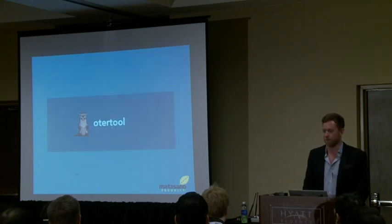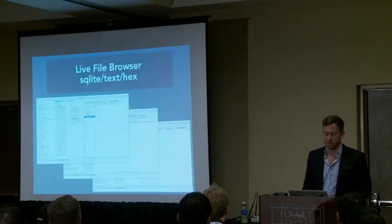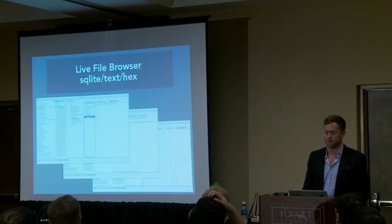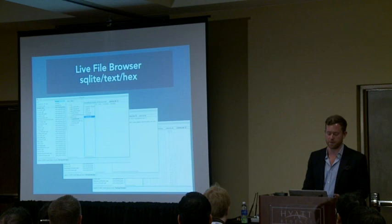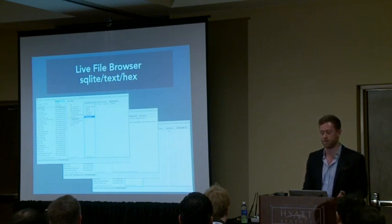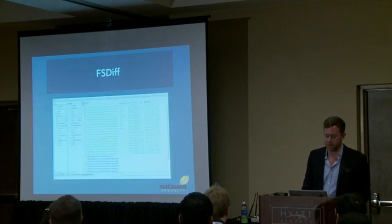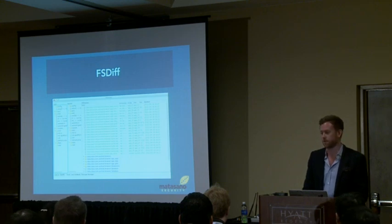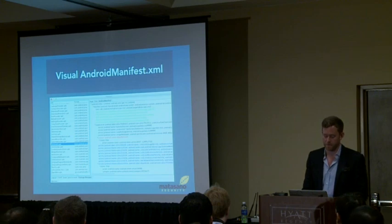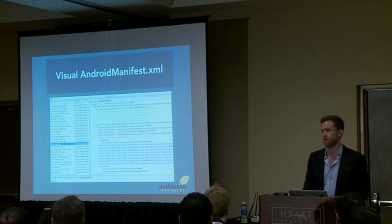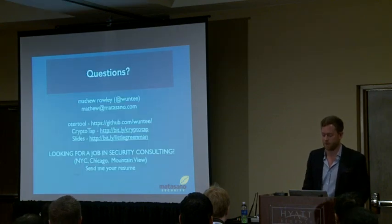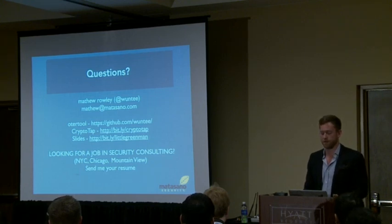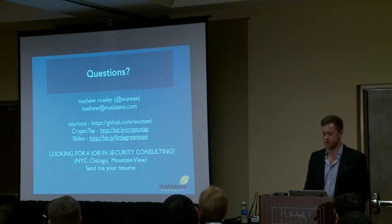What I was talking about before was kind of the start of why this whole talk exists. OtterTool has a whole bunch of other features: a live file browser that allows you to see SQLite databases, text files, and hex files directly from the device; a file system differ that allows you to scan the file system at two different points in time and see what files have changed on the device; and the ability to visualize the Android manifest file, highlighting key places from a security perspective. My name is Matt Raleigh, Matthew at Matasano. OtterTool can be obtained on GitHub. The CryptoTap is there, the slides are there as well. My one plug is that if anyone's looking for a job in security consulting, send me your email — New York City, Chicago, or Mountain View.